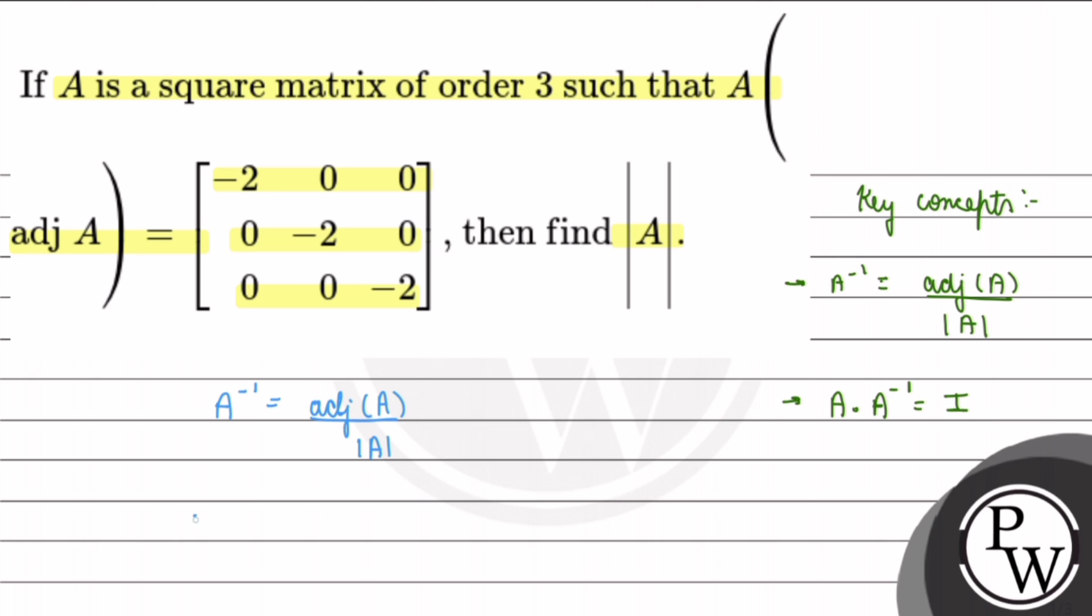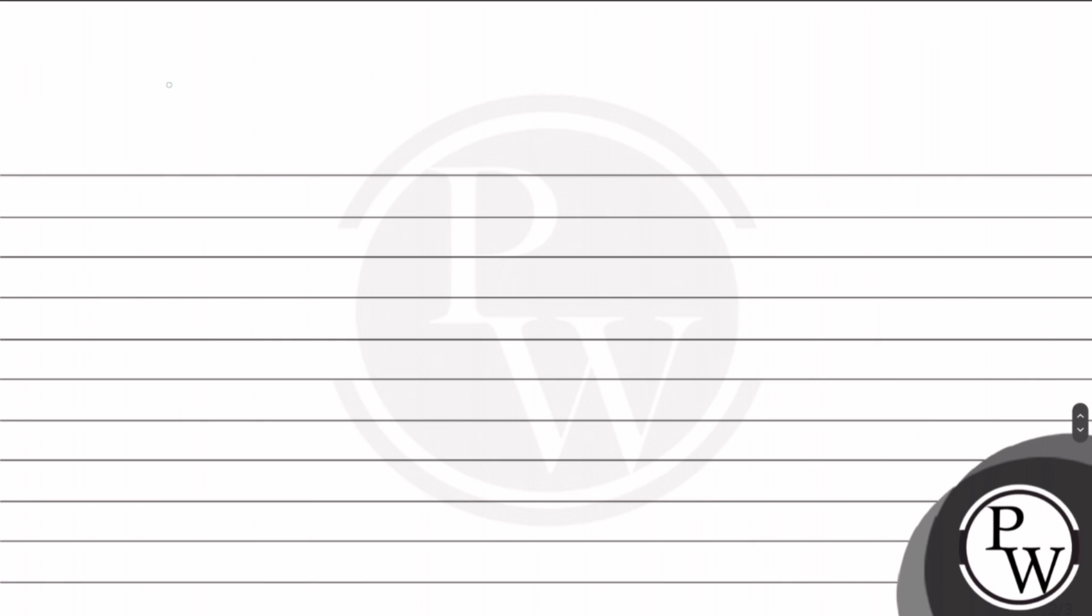I will multiply both sides by A, so this will come to me: A into A inverse is equal to A into adjoint of A divided by determinant of A. So this will be I, the identity matrix, which is equal to A into adjoint of A divided by determinant of A.